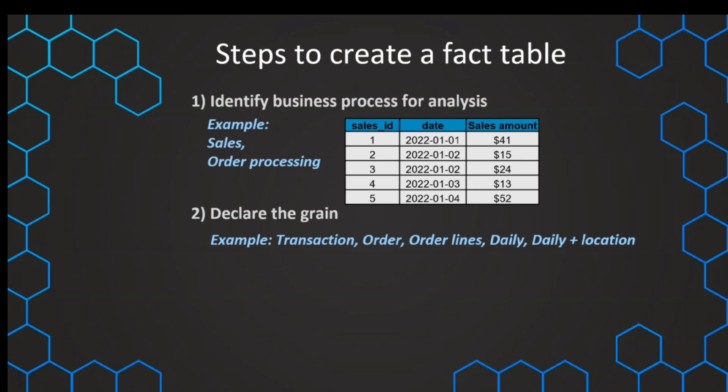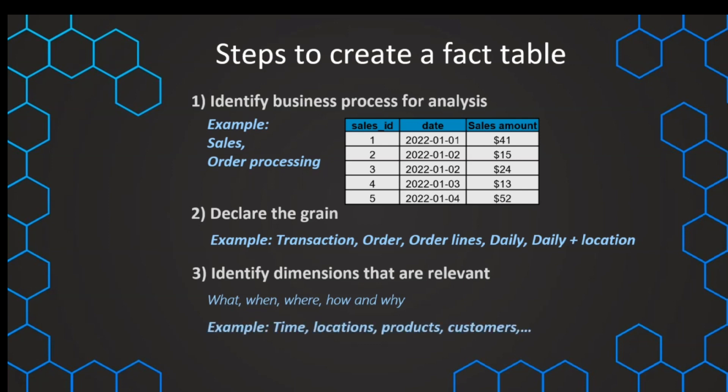The next step would be to identify the dimensions that are relevant. And we can do that by just going to the questions: What is happening? When it is happening? Where? How? And why? So if we focus on these words, then we can also find our different dimensions. For example, it can be different time aspects, locations, products, customers, and so on. Whatever is important in our business scenario.